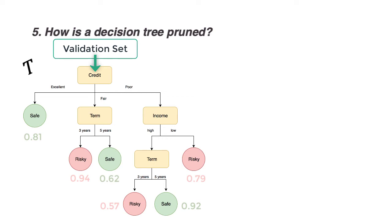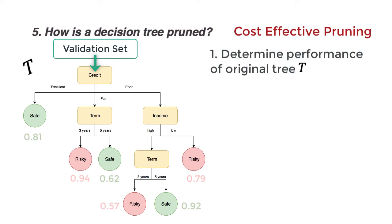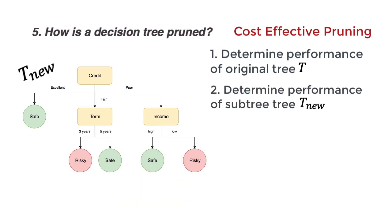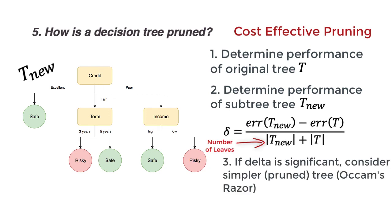We can mitigate this by pruning the decision tree. Consider a method called cost-effective pruning. With the validation data, determine the performance of the original tree, t. Now consider the subtree t1, and remove it from the original tree. Replace the subtree with a leaf. If the validation set doesn't have a significant difference in performance, we consider the simpler tree. Occam's razor comes to play here. If pruned, consider the pruned tree as the original, and continue to the next subtree.